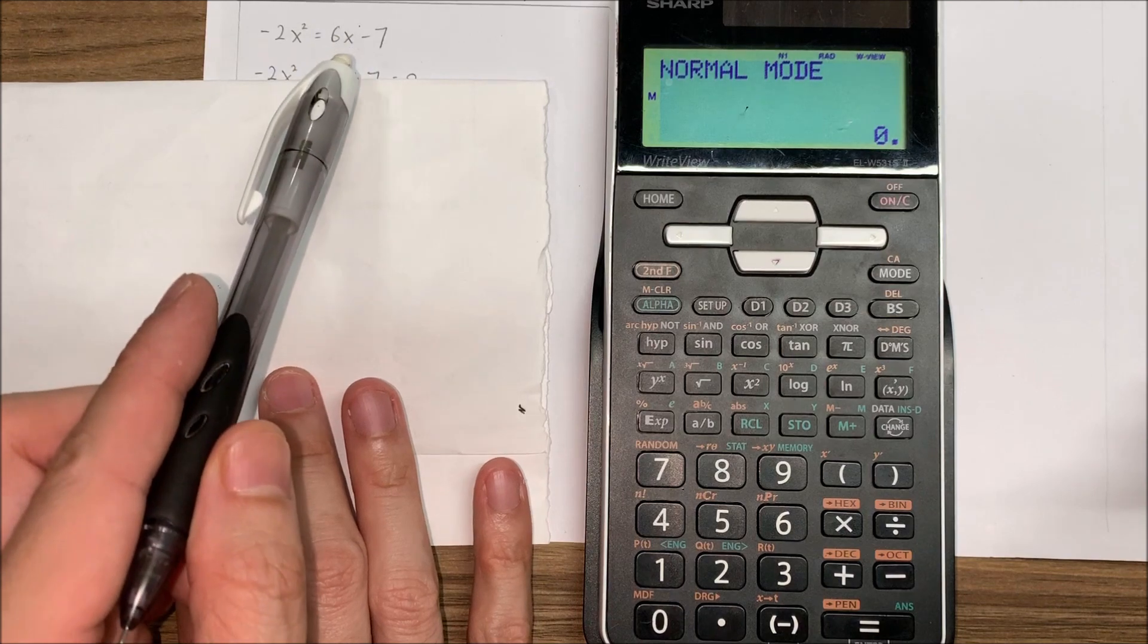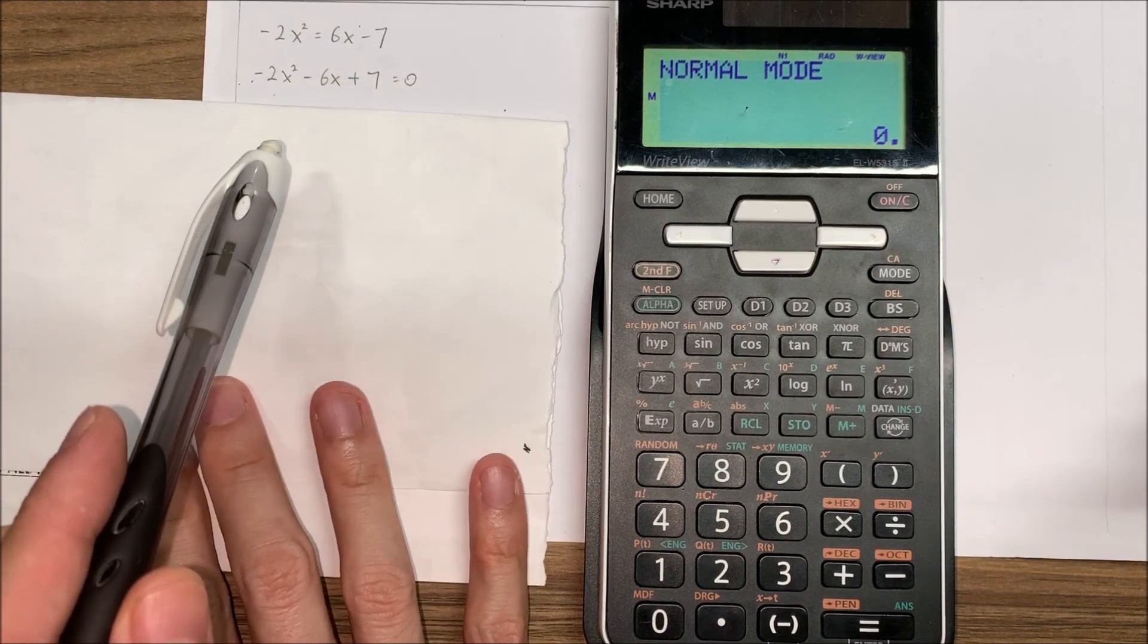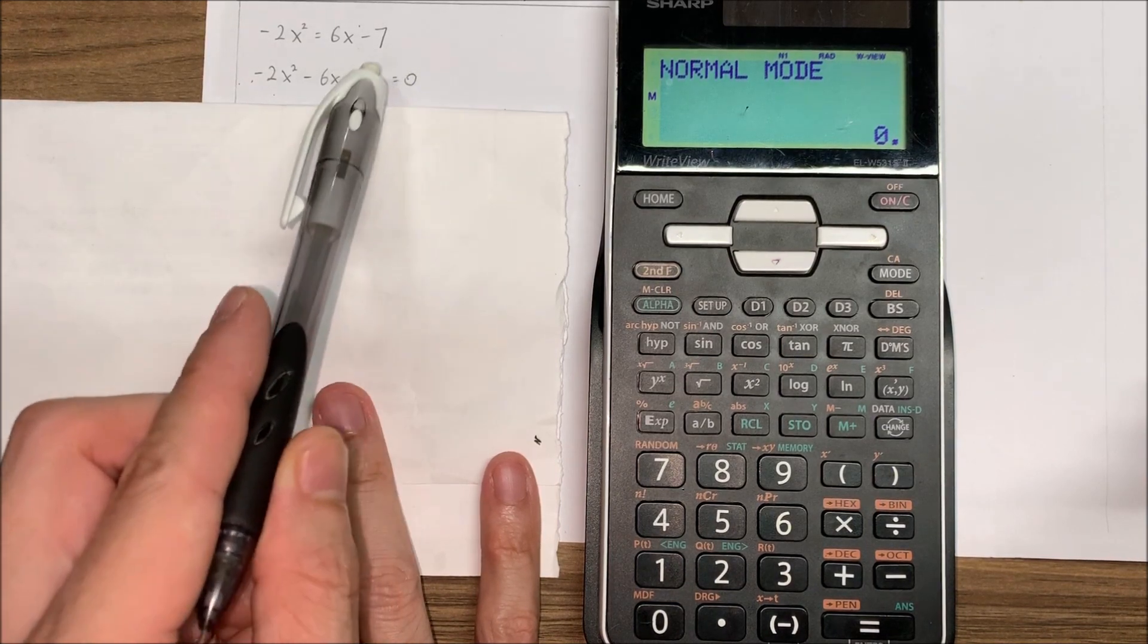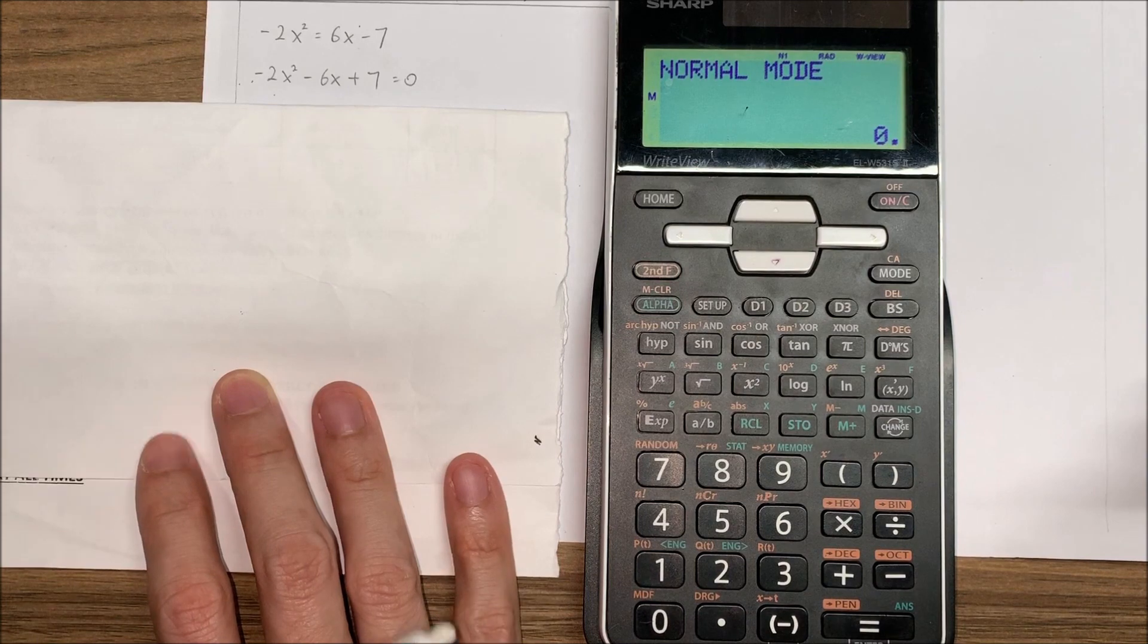I'm going to shift the 6x minus 7 to the left side. You can see that I've done that in this step, and then now my right side is equal to zero. So that's one of the criteria before you use the quadratic equation.